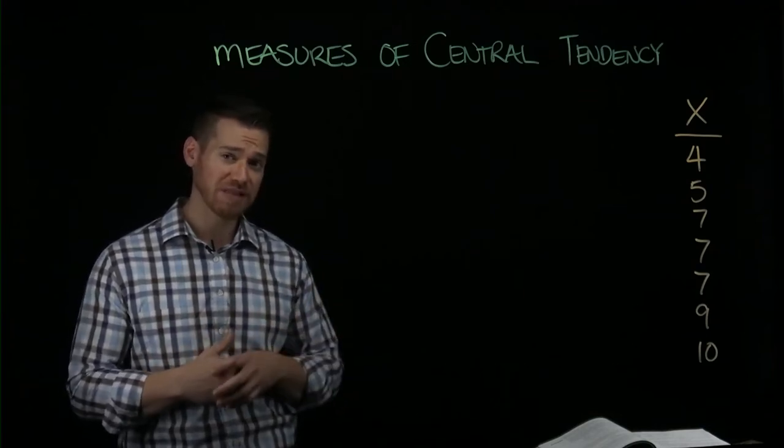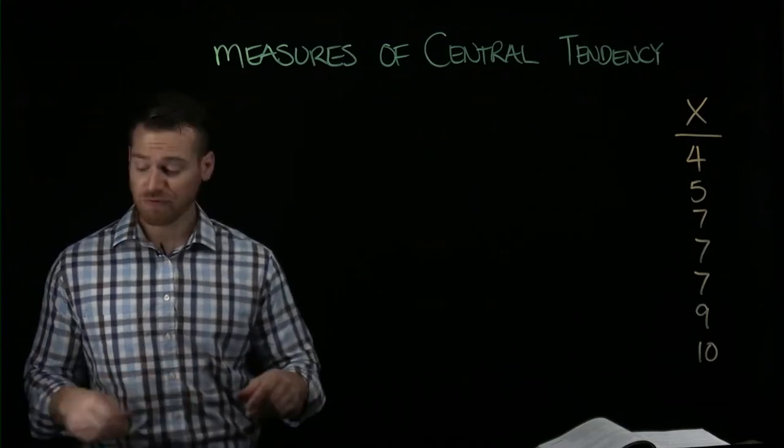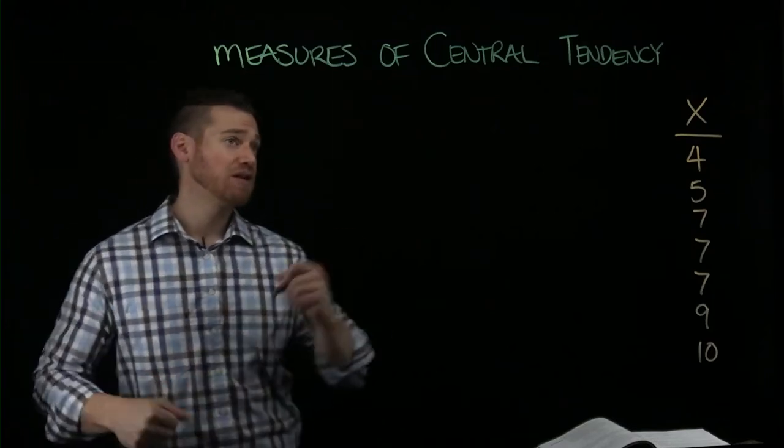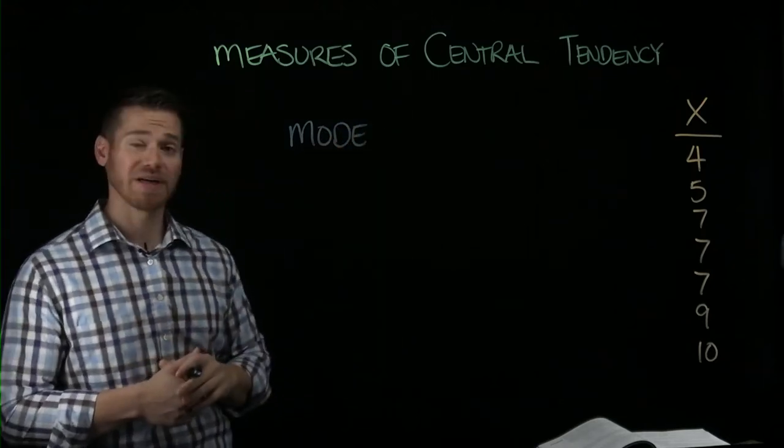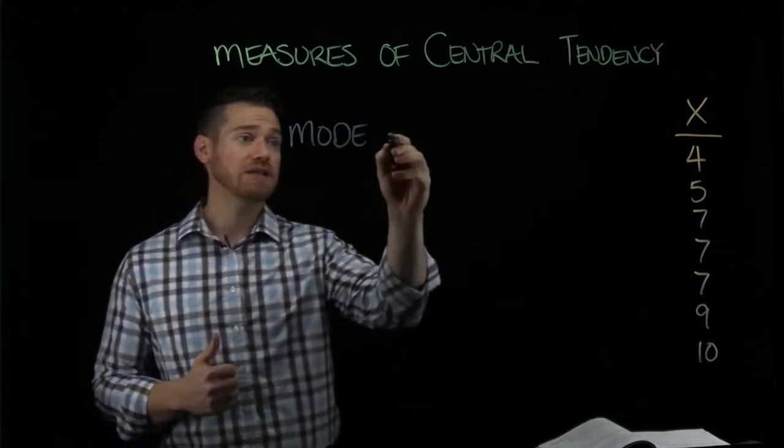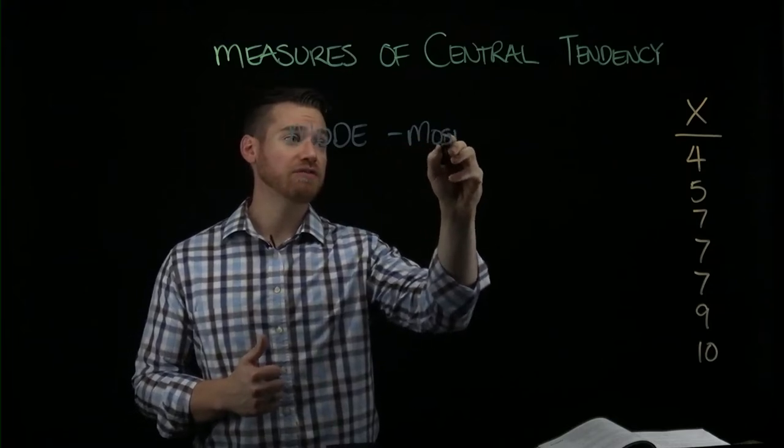So we'll talk about three specifically in our class. The first one we're going to talk about is the mode, and I'm going to start with the mode because it's probably one of the easier ones to identify. The mode is the most frequent occurring value.